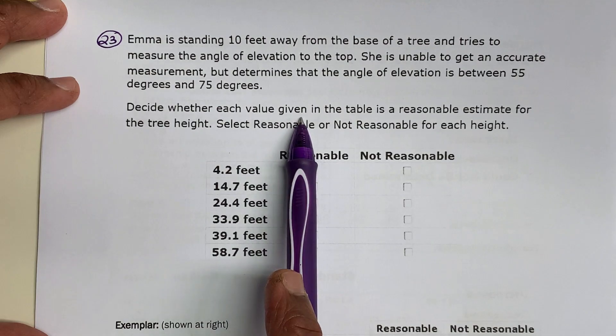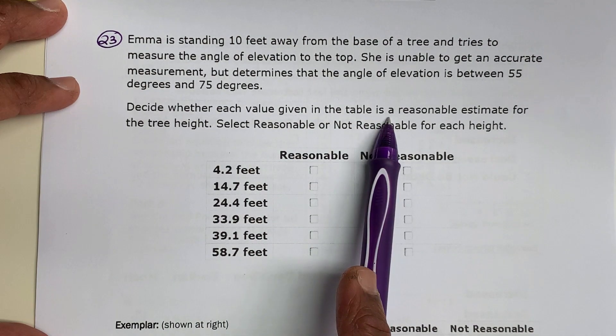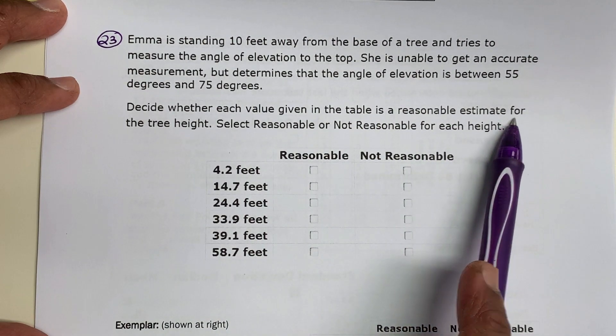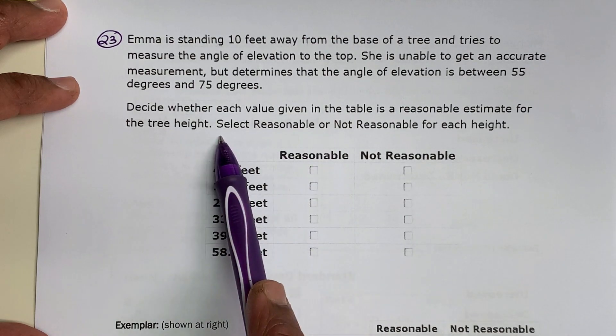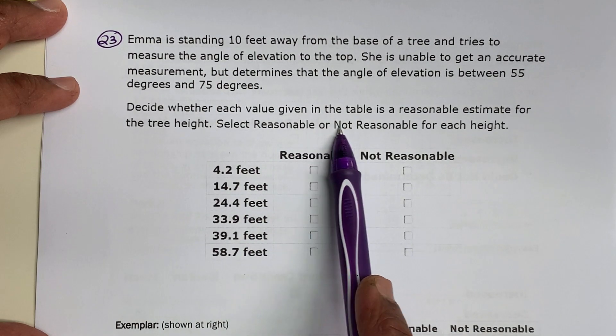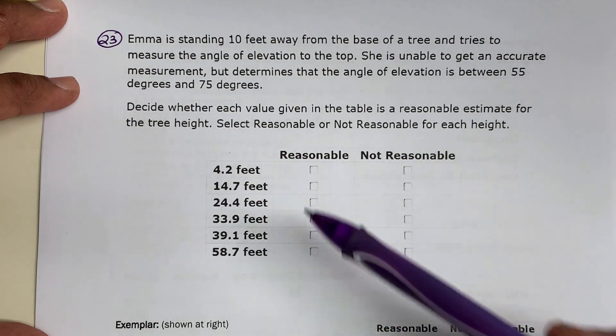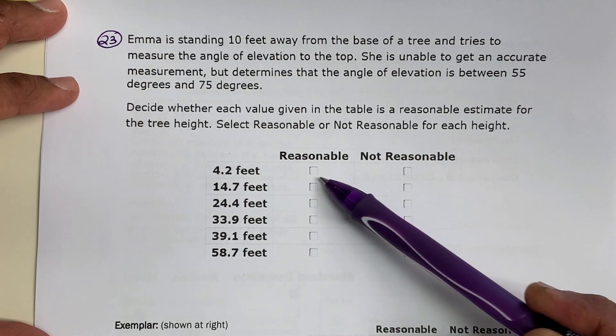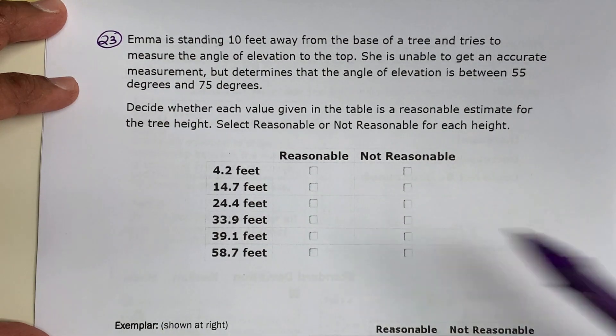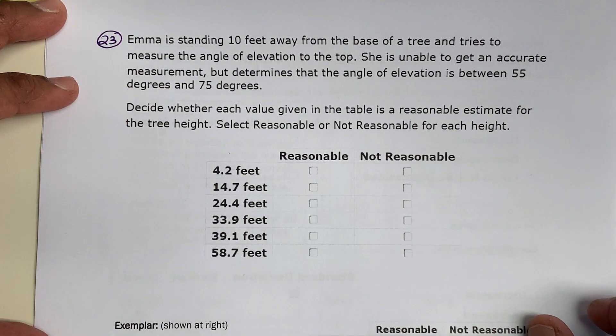Decide whether each value given in the table is a reasonable estimate for the tree height. Select reasonable or not reasonable for each height. These are the answers given, and we just have to select which one is reasonable and which one is not.